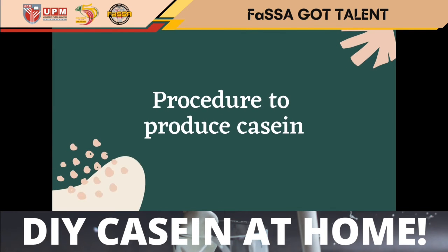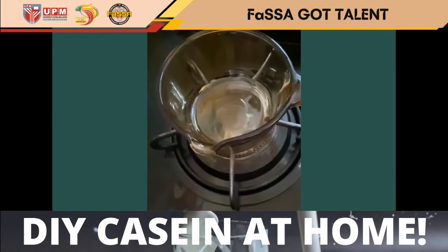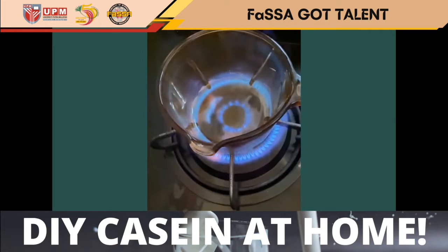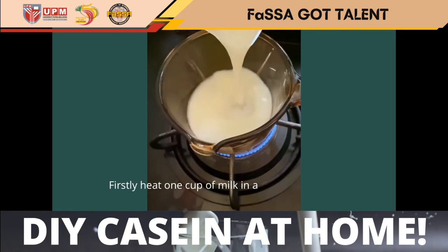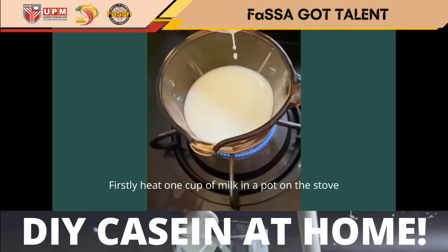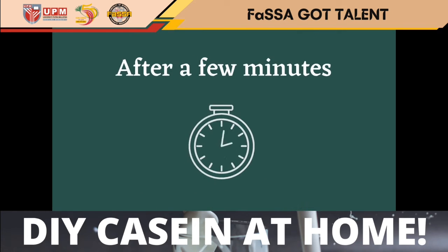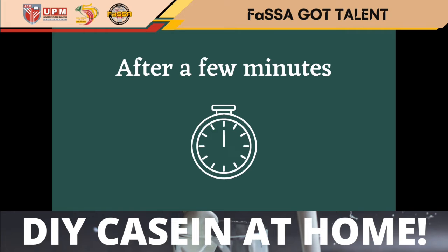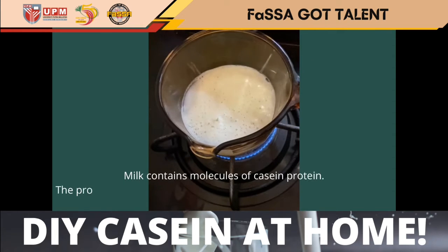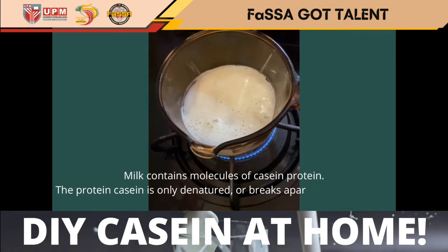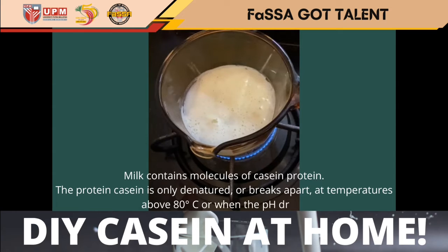The procedure to produce casein: firstly, heat 1 cup of milk in a pot on the stove. Milk contains molecules of casein protein. The protein casein is only denatured or broken apart at temperatures above 80 degrees Celsius or when the pH is altered.